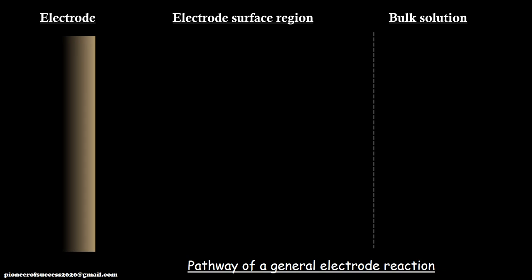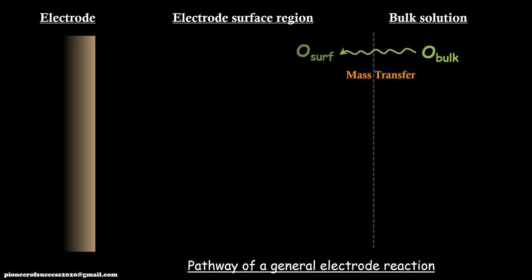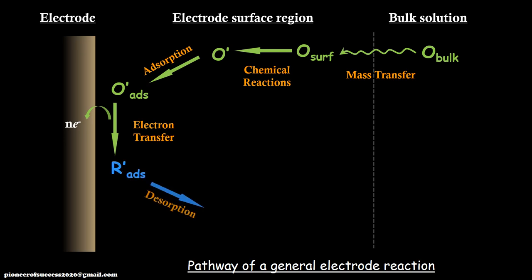Now, we talk about the pathway of a general faradic electrode reaction. There are multiple resistances which come in series during the process. We will briefly talk about what the sluggishness and resistances are during a typical faradic process. In a faradic process, we have kept one electrode deep inside the electrolyte. At the very junction of electrode and electrolyte — we call it the interface — there is a certain range where resistances come in, and that determines the process. Away from the electrode where there is no influence, we call it the bulk solution. Say we have an O bulk solution, and the reaction is O + ne⁻ → R, which is the typical redox reaction.